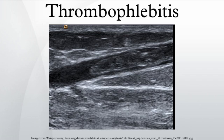Thrombophlebitis is phlebitis related to a thrombus. When it occurs repeatedly in different locations, it is known as thrombophlebitis migrans, migrating thrombophlebitis, or Trousseau syndrome.